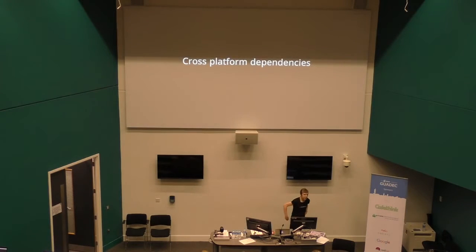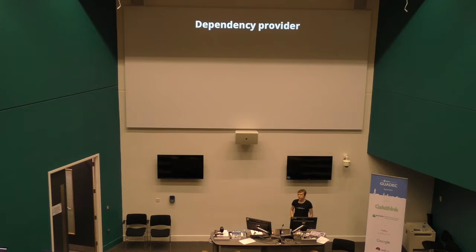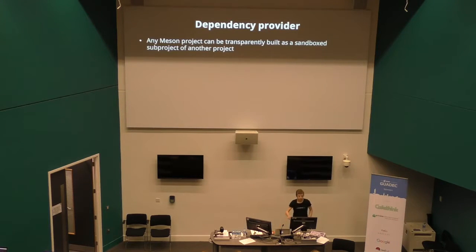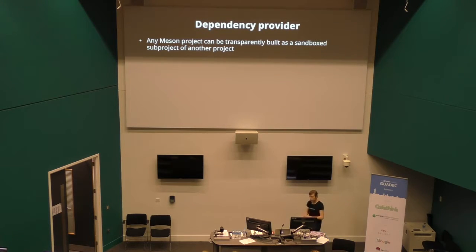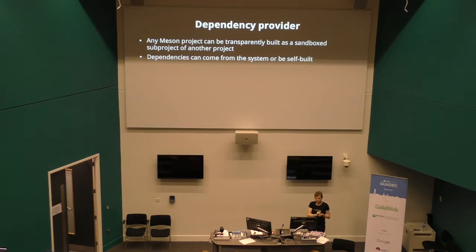Let's move on to the other topic, which is perhaps more important: dependencies. In Meson, we have a dependency provider system. The point is that if you have a Meson project, you can build it as a subproject of any other project — you can take existing things, put them inside your own project, and just build them there. Any dependency can come from the system via package config, or you can build it yourself. The important thing is that the build definitions are the same either way.